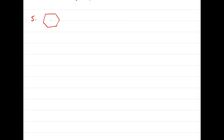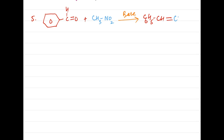In the fifth example, benzaldehyde condenses with nitromethane in the presence of base to form an unsaturated nitro product. Since no ester or any other acid derivative group is linked to the active methylene compound, hydrolysis and decarboxylation are not needed.